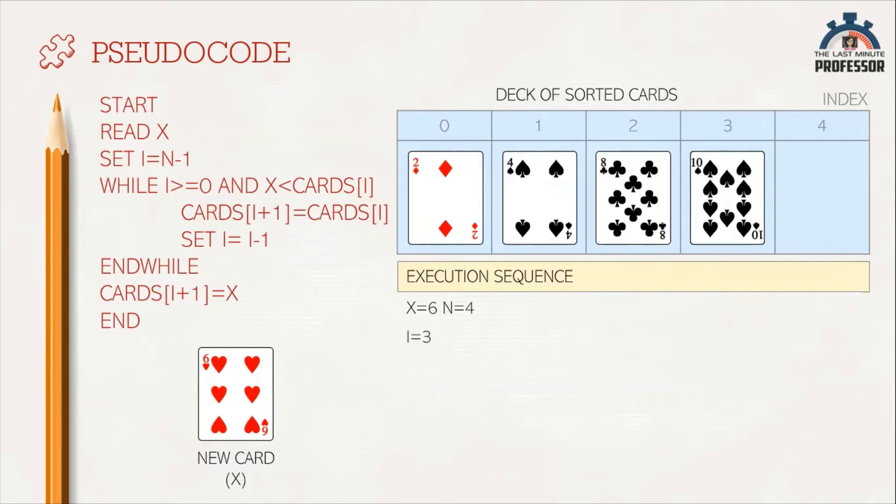Now, i value has to be greater than or equal to 0, and the x value should be less than cards[i] for me to repeat the process. So I'm checking if both the conditions are true. 3 is greater than or equal to 0. Yes.